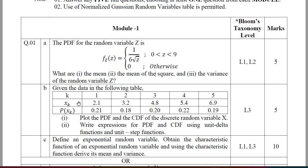Moving on to question number 1B, given a set of data, you should plot a PDF (probability density function) and a CDF (cumulative distributive function) of the discrete random variable X. Next, write the expression for PDF and CDF using the unit delta function and unit step function.